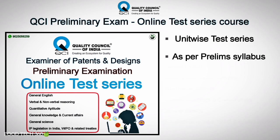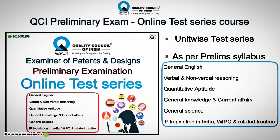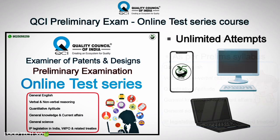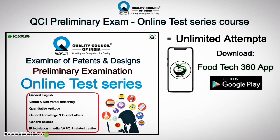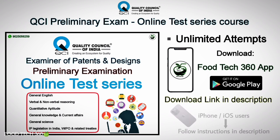FoodTech 360 has launched an online test series course for the QCI preliminary examination. In this course, you will get test series from all the units mentioned in the preliminary exam syllabus. You will get a clear picture of how the questions will be asked for the exam from these units. You can attend these tests unlimited times from your phone, desktop or laptop. This online test series course is available only in FoodTech 360 Android app. Download the app from the Google Play Store or through the download link given in the description. If you are an iPhone or iOS user, then kindly follow the instructions given in the description to access the app.